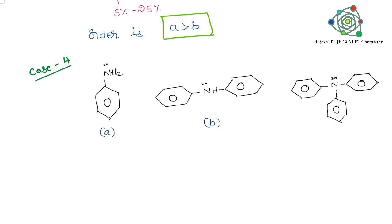Nitrogen has a lone pair that is used in different resonance structures. More number of resonance structures means more stability. Automatically, basic nature will be reduced or decreased. So you can say a is greater than b, b is greater than c.